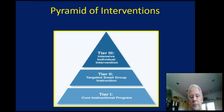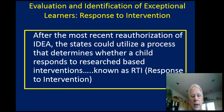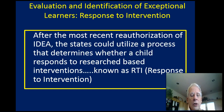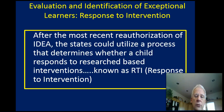There's a graphic that illustrates the tiers. Until just a few years ago, states were given the opportunity to use just the discrepancy model — the difference between an IQ score and achievement through achievement tests. But IDEA states that states could utilize a process that determines whether a child responds to research-based interventions. The law does not say 'must,' but many states, including Georgia, are moving to RTI as opposed to the discrepancy model.